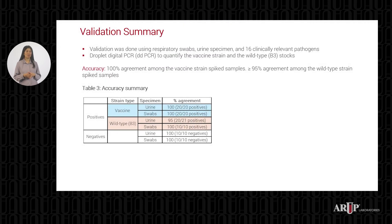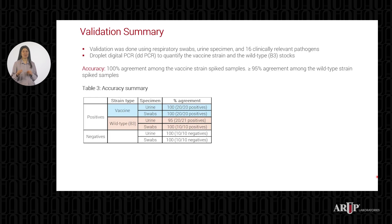Once the optimized conditions were established, validation work proceeded smoothly. Validation was done using respiratory swabs, urine specimens, and clinically relevant pathogens. Positive culture material for vaccine and wild-type strains were quantified using droplet digital PCR and were used for spiking. To assess accuracy, varying loads of vaccine and wild-type strains were spiked into swabs and urine samples. Results show 100% agreement among vaccine strain spiked samples as well as B3 spiked swab samples, whereas 95% agreement among B3 spiked urine samples. All tested negative samples showed negative results.